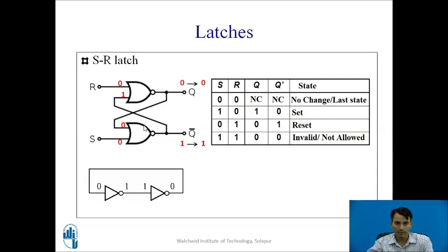Following the same method for other inputs: when S=1 and R=0, the output Q=1 and Q-bar=0 — this condition is known as the set state, where output Q is 1. When S=0 and R=1, the output Q=0 and Q-bar=1 — this is known as the reset state. When both inputs are S=1 and R=1, both outputs become the same, but Q and Q-bar must always be complements of each other, so this condition is known as the invalid or not-allowed state. In this way, you can find out the output for each input and determine the state of the SR latch.